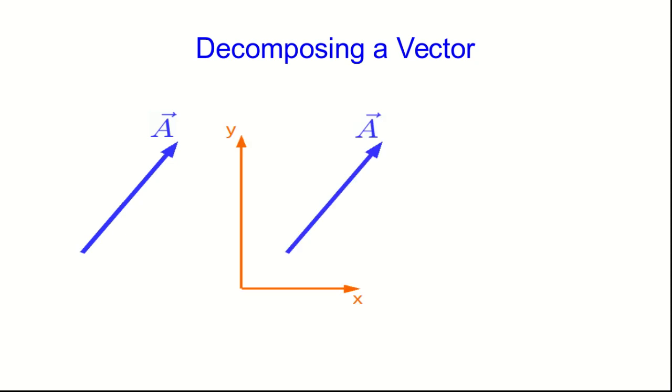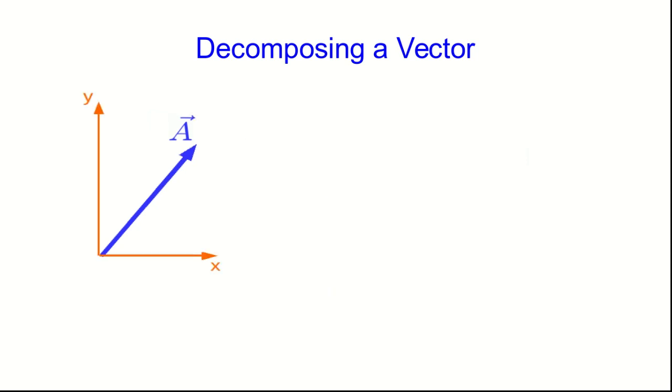First we're going to define some axes and we can define the axes any way we want. I've drawn the way you're probably most comfortable with. And we shift the vector right onto the axes or you can think of it as shifting the axes to the vector.